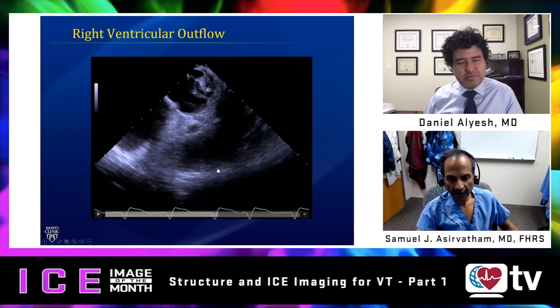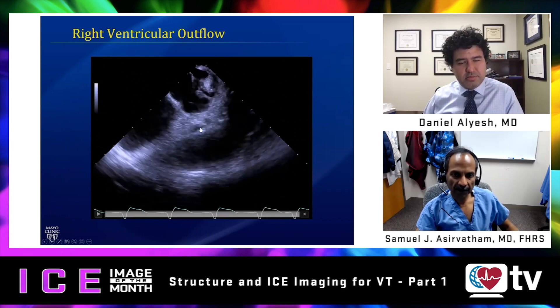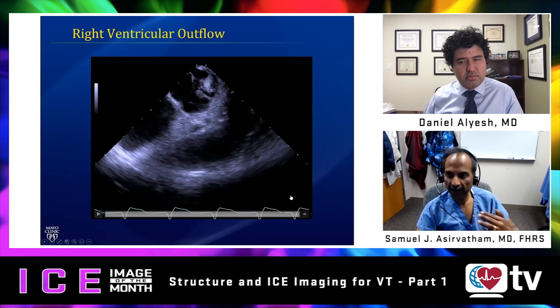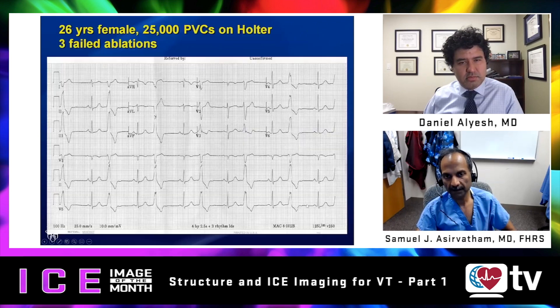Sometimes you will also see branching of the coronary vessels, and there again you'll have to judge your distance carefully when deciding where to ablate.